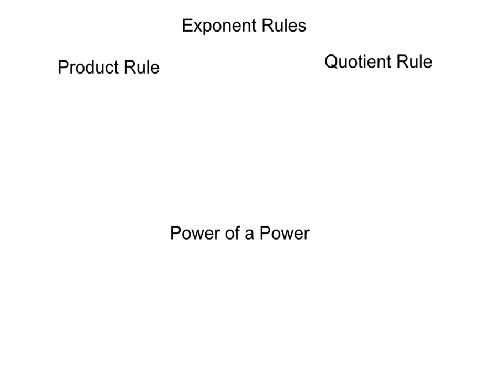The first one we want to discuss is the product rule. That tells you when you have something like 3 to the third power times 3 to the fifth power — when you're multiplying two exponential expressions that share the same base — you can add their exponents. The general rule is: a to the n times a to the m equals a to the n plus m. When you multiply like bases, you add their exponents.